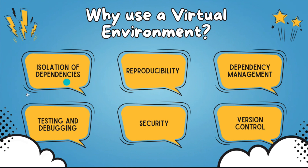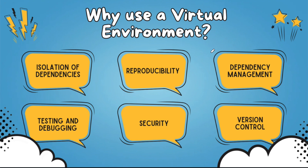The first one is isolation of dependencies — if you're working on multiple projects, you want to keep each of the packages different, not interfering with each other. The next one is reproducibility — if you're a developer using my projects and I give you all the dependencies and packages in my code, it ensures you can recreate the same environment I was in when I created this project. We have dependency management, which keeps it easy to manage all your dependencies and it's easy to debug and test. This also increases enhanced security, helping mitigate the risk of unintentional library upgrades or security vulnerabilities.